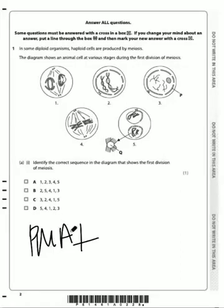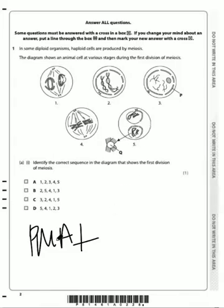Then we have the beginning of anaphase, in which the spindle fibers contract, pulling the chromosomes away from each other. After that, a nuclear membrane begins reforming around the now-separated chromosomes — that is telophase.